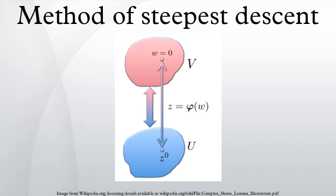The contour of steepest descent has a minimax property. Siegel described some other unpublished notes of Riemann, where he used this method to derive the Riemann–Siegel formula.